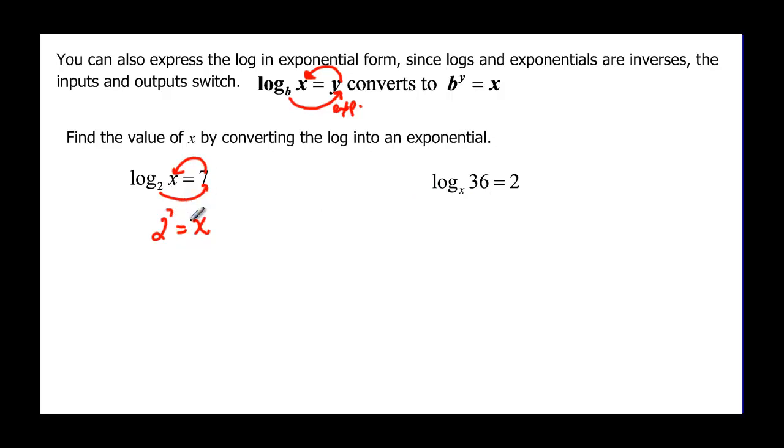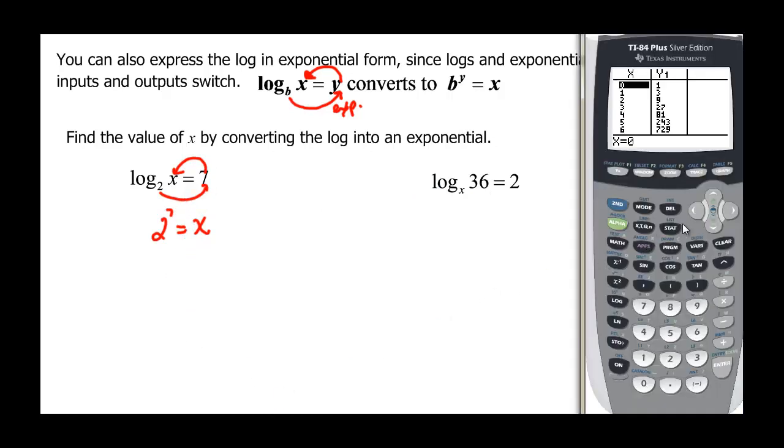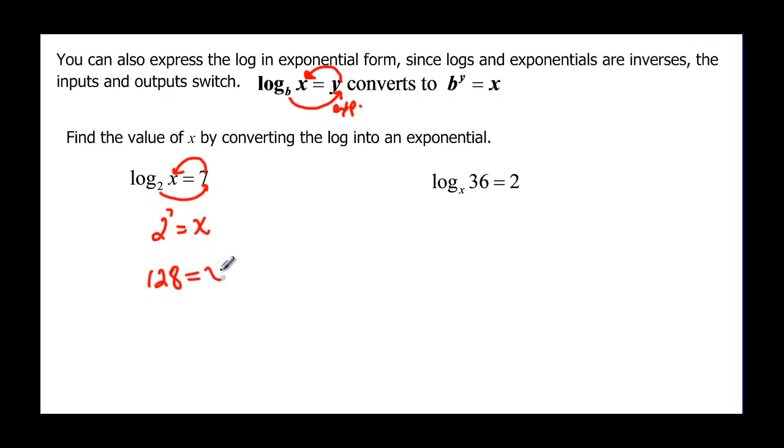So 2 to the 7th, we could just go right to our calculator with that, and just go into our home screen. 2 carat 7, that's something we can compute, and 2 to the 7th is equal to 128, so x must be 128. In other words, log base 2 of 128 would be equal to 7. This is our answer right here, but the true statement would be log base 2 of 128 would be equal to 7.